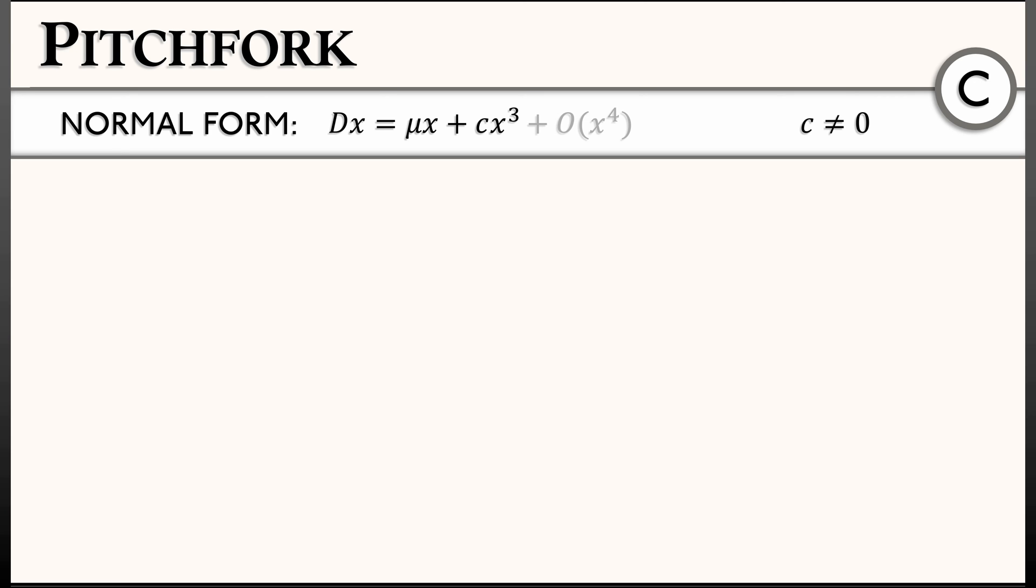Take a look at this. This looks kind of like the transcritical that we just saw, but instead of having a second order term in x, we have a cubic term in x. Let's see how this changes the equilibria.